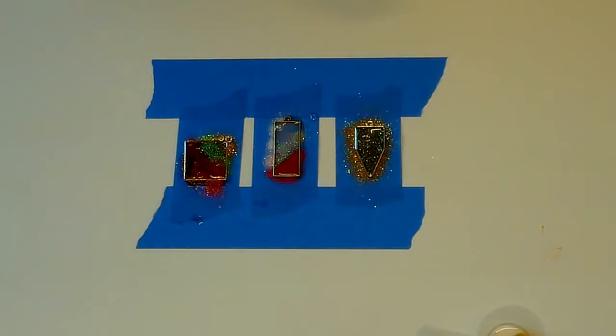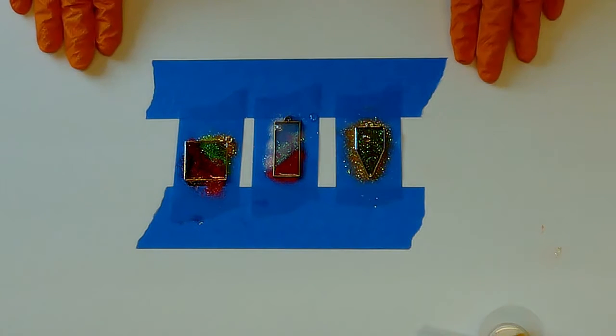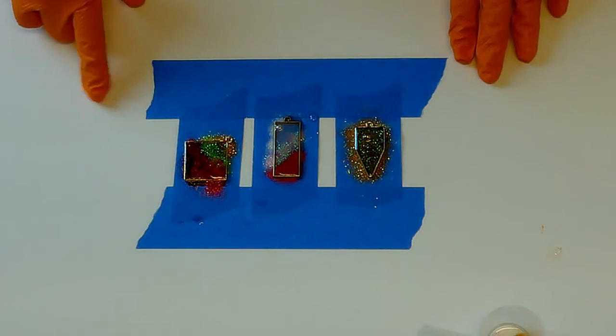Let the pendant sit for 20 minutes. During this time, the resin will try and work the bubbles out. The heat gun can help this process, and tweezers can be helpful in popping the larger bubbles.